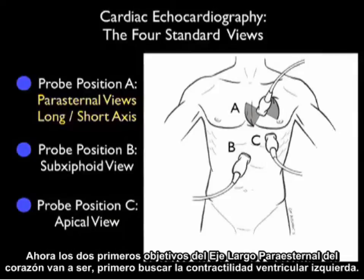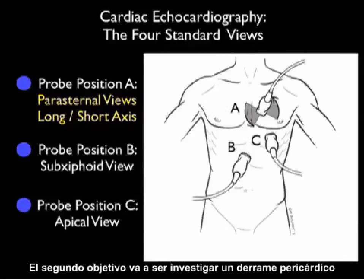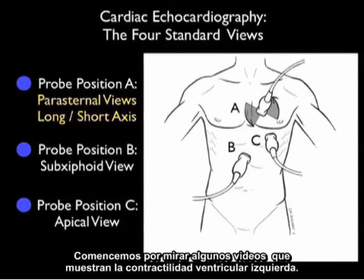The first two goals from the parasternal long axis view of the heart are: first, to look for left ventricular contractility, and second, to investigate for a pericardial effusion. Let's begin by looking at some clips going over left ventricular contractility.